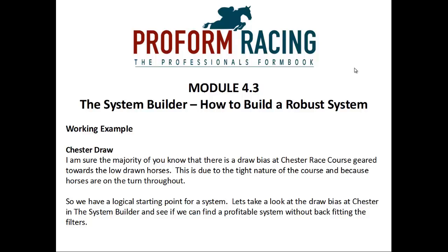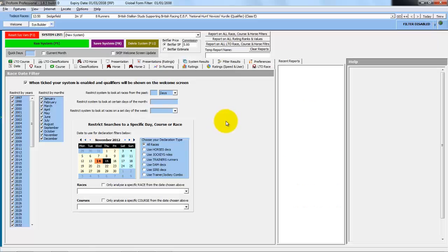Working example: Chester draw. The majority of you will know there is a draw bias at Chester racecourse geared towards the low-drawn horses. This is due to the tight nature of the course and because horses are on the turn throughout. So we have a logical starting point for a system. Let's take a look at the draw bias at Chester in the system builder and see if we can find a profitable system without back-fitting the filters.